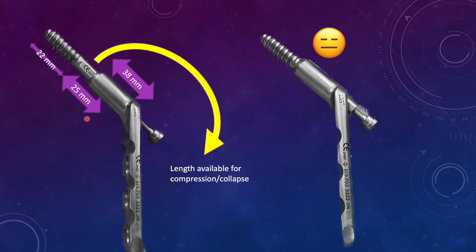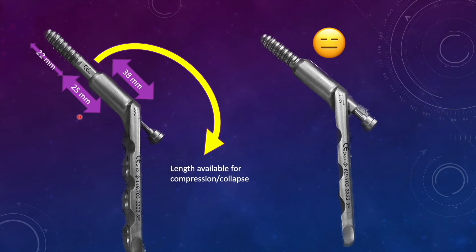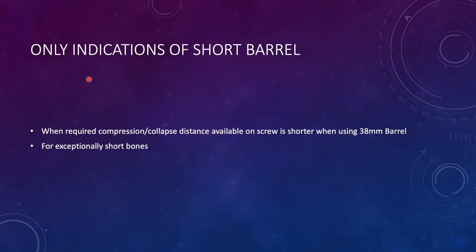However, the surgeon may accept slight variations in this distance. If it comes out to be around 20 millimeter and the bone stock is good, we can accept the 20 millimeter distance at the expense of using a long barrel. The long barrel actually provides more stability, so whenever possible, use the long barrel. But if the distance available for collapse and compression is very low, then definitely go for the short barrel.